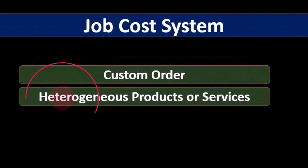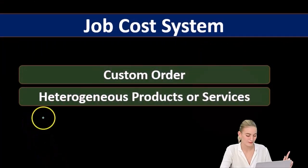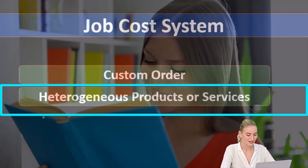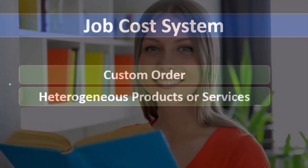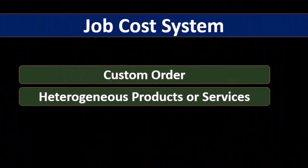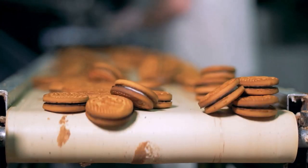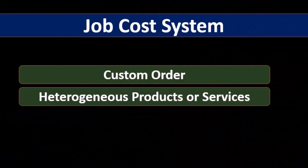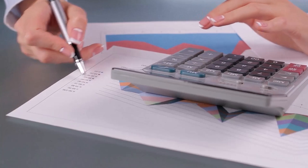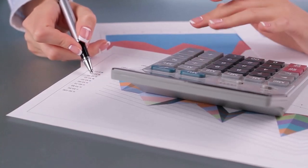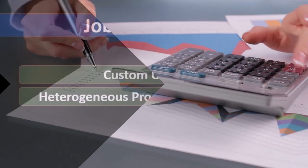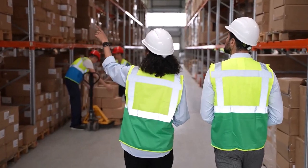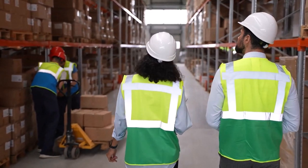Our next characteristic is heterogeneous products or services, meaning they're different. Heterogeneous is the opposite of homogeneous — heterogeneous means different, homogeneous means the same. The types of things we're producing are not all exactly the same, which follows from the idea that they're custom. Because of those differences, we cannot evenly allocate costs to whatever we're making. If one guitar is a lot more detailed than another, we cannot evenly allocate the costs — that's one reason we use a job cost system. Similarly, if one construction job is much larger than another, we can't allocate the same cost to both.